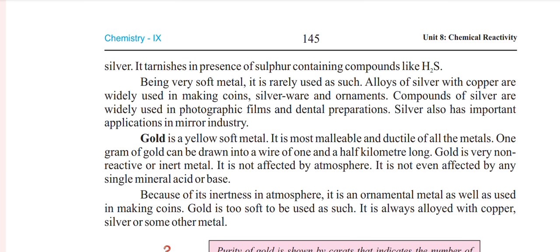Silver also has important applications in the mirror industry. Gold is a yellow, soft metal. It is the most malleable and ductile of all metals. One gram of gold can be drawn into a wire of one and a half kilometers long. Gold is very unreactive, or an inert metal.